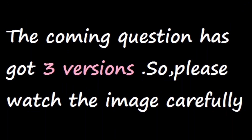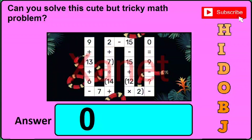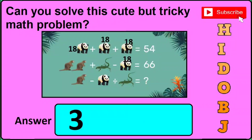Now the last question, question number 20, has got three different versions or types. First, you need to read the question, and second, you need to watch the image carefully. In version one, it is asked: can you solve this cute but tricky math problem? If you find this sort of image, the correct answer will be 0, so just click 0 in the answer box. In version two, it is again asked: can you solve this cute but tricky math problem? If you find this sort of image, the correct answer will be 3, so just click 3 in the answer box.